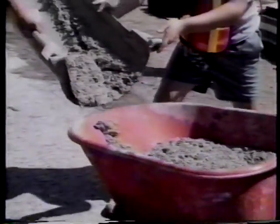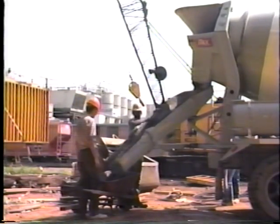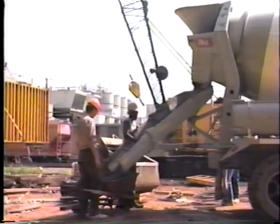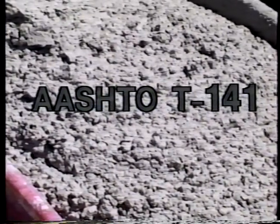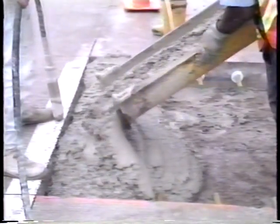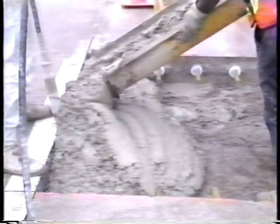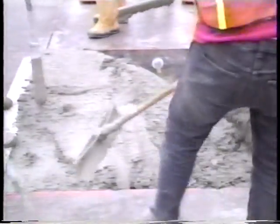Before any of the tests can be performed, a sample of the concrete is needed — a representative sample. The concrete to be tested has to be typical of the entire truckload. Sampling should be done according to AASHTO designation T-141. The basic rule is this: don't take the sample from the beginning or end of the discharge. Take it from the first one-third of the discharge, but never from the first two cubic feet.